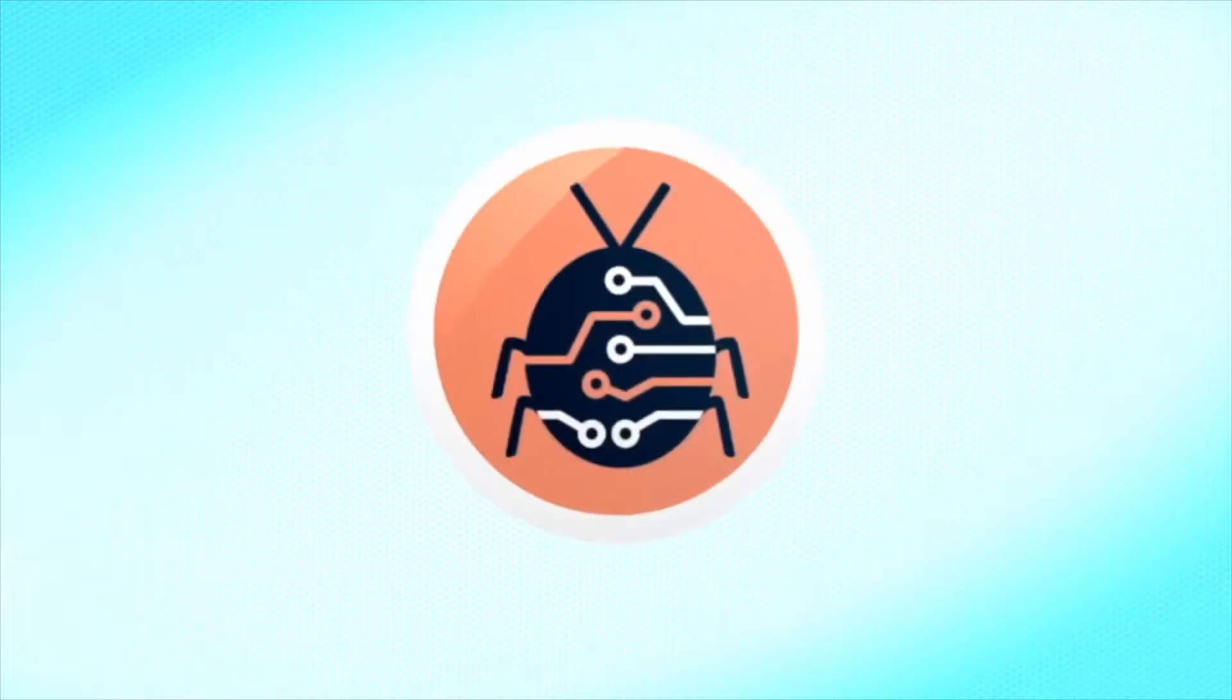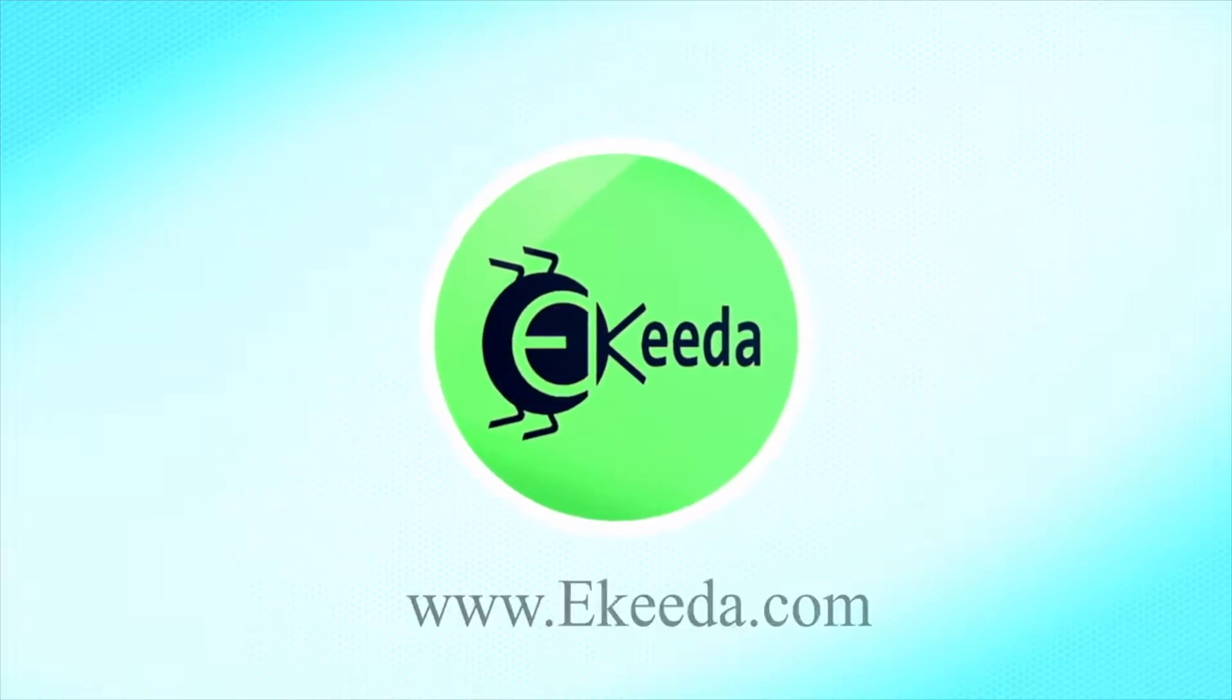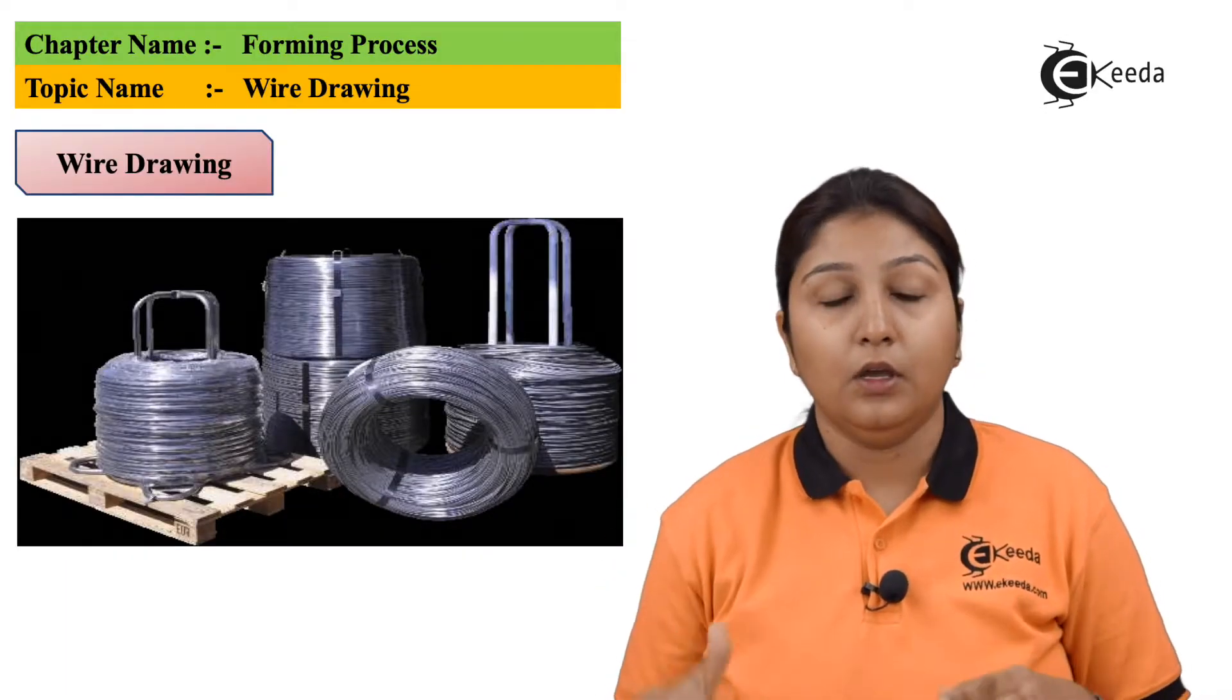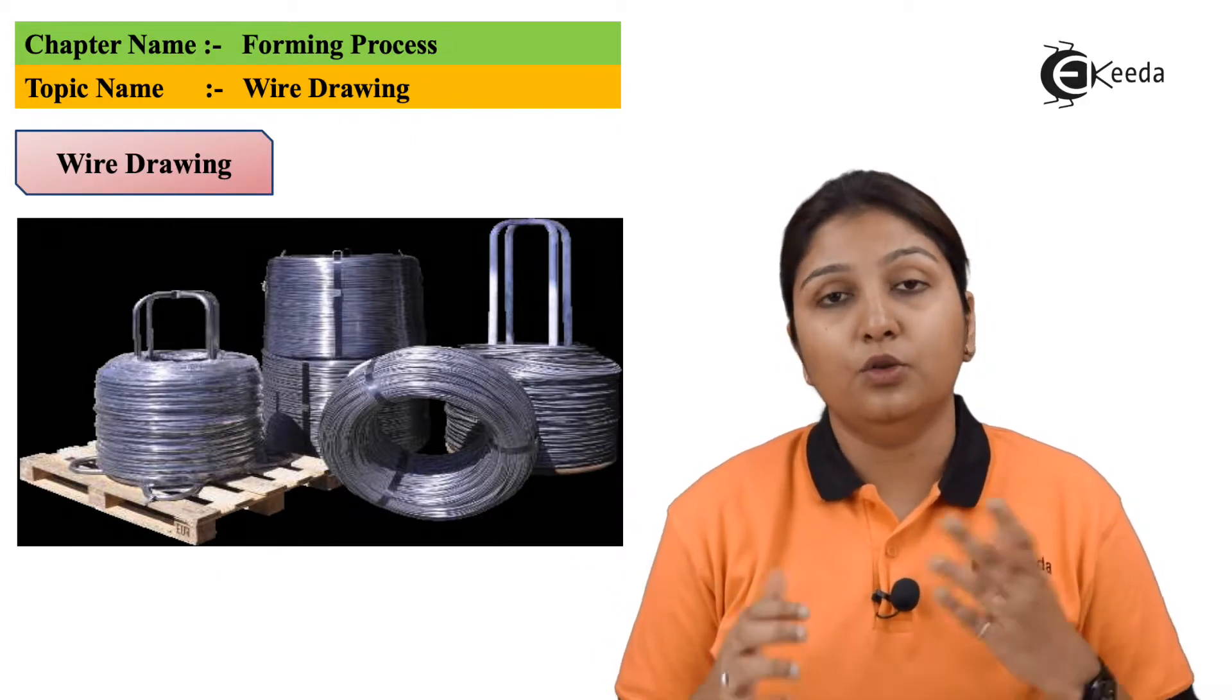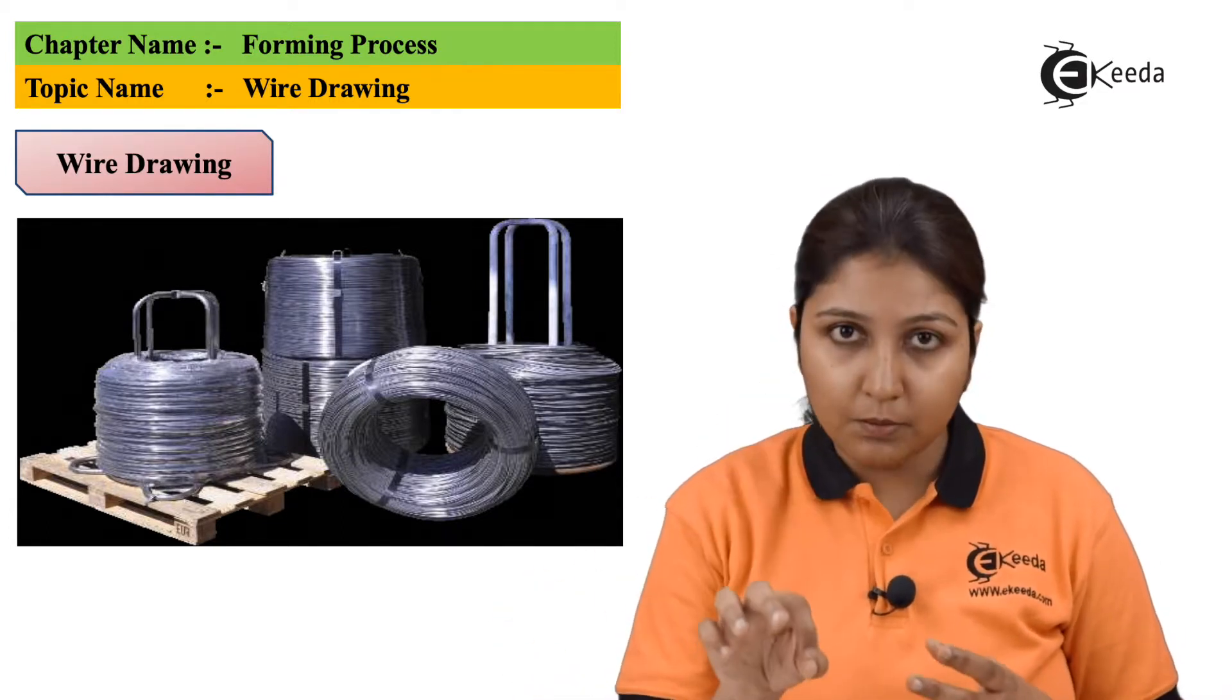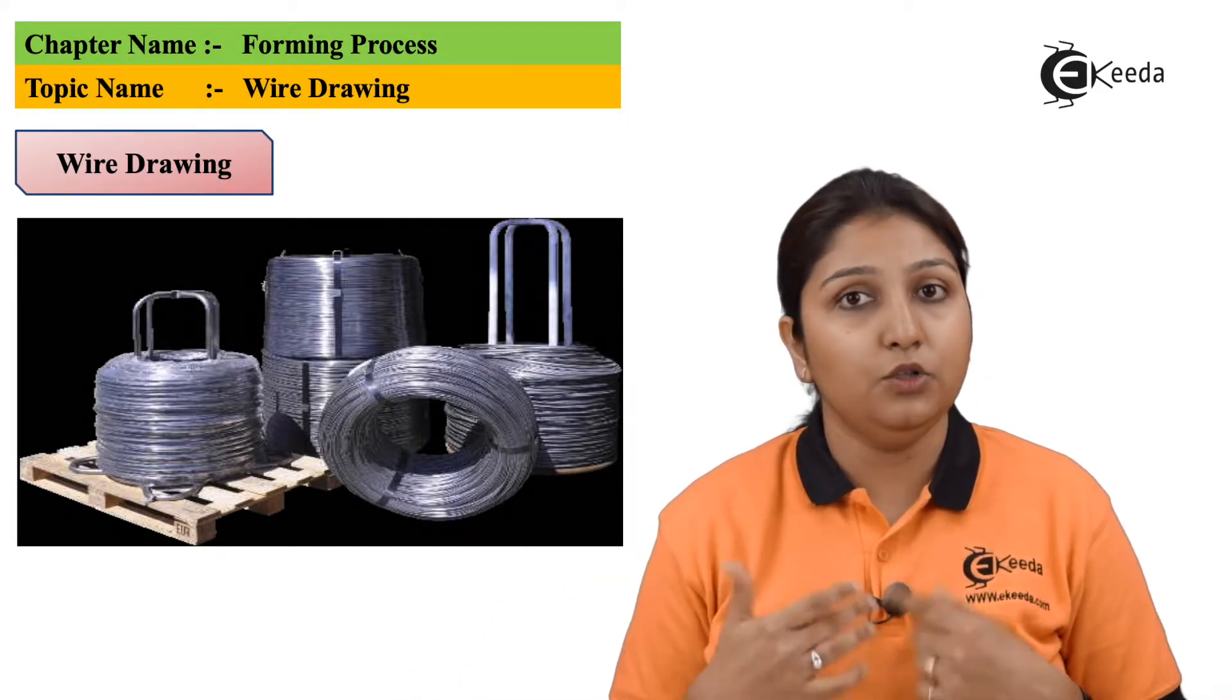So the name is wire drawing. In the diagram you can see there are many wires. It is drawn or made through a series of reduction - that is, a billet is made, from that a small wire is made. So a series of reduction takes place to form a bunch of wire.